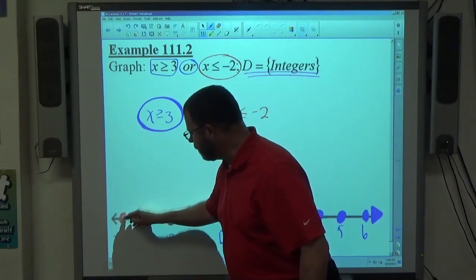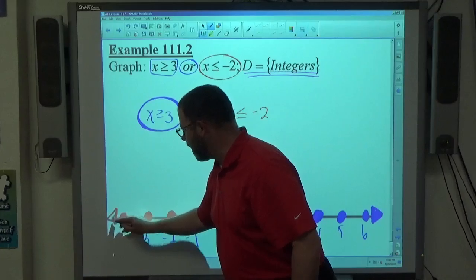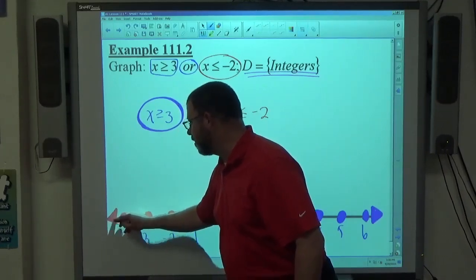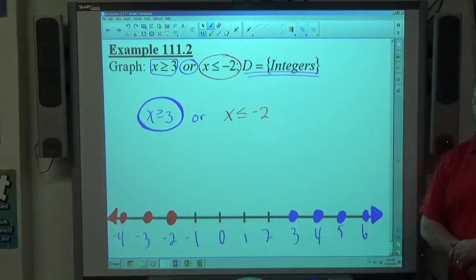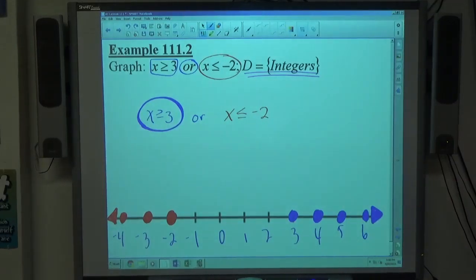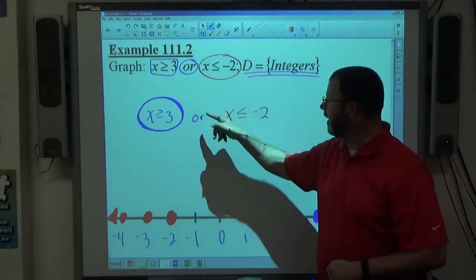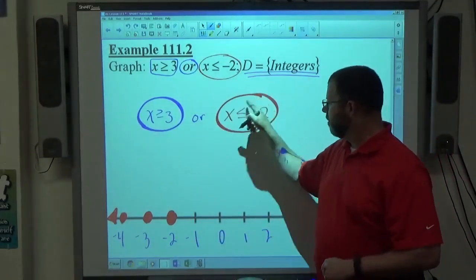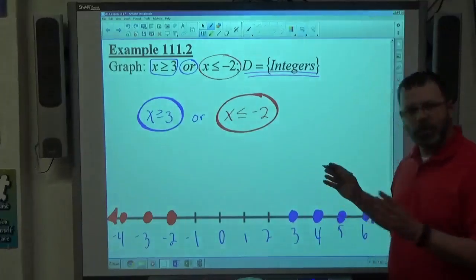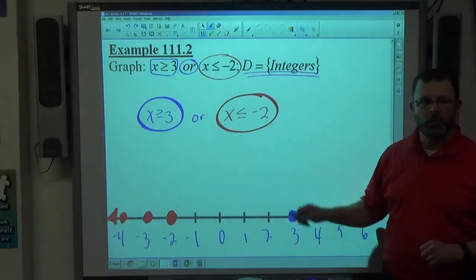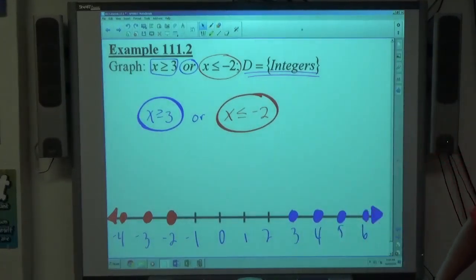So if I start with x is greater than or equal to positive 3, 3 is an integer and x equals 3 is correct. Greater than 3 would be 4, which is an integer, 5, which is an integer, and 6, which is an integer. And then I want to fill in the arrow to show that I continue on. So if I were to pull this out more, 7, 8, 9, 10, and so on, I'll get it graphed also.